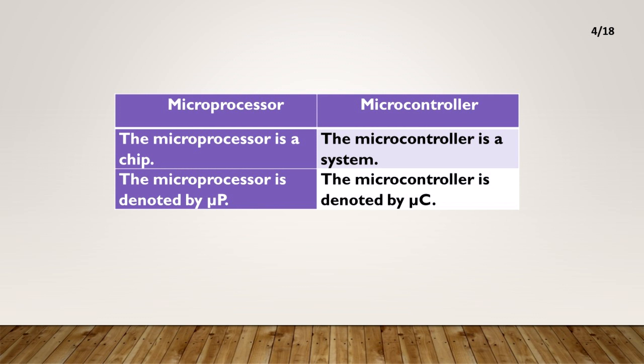The microprocessor is a chip. The microcontroller is a system. The microprocessor is denoted by μP. The microcontroller is denoted by μC.